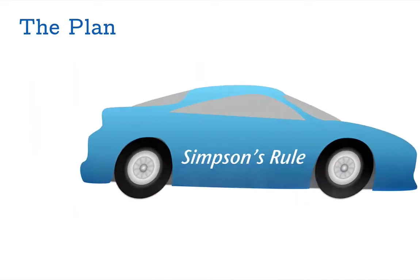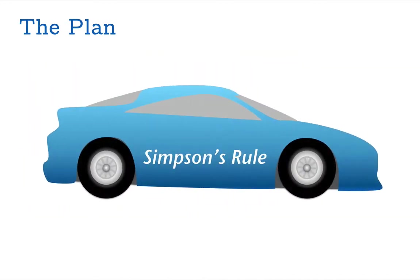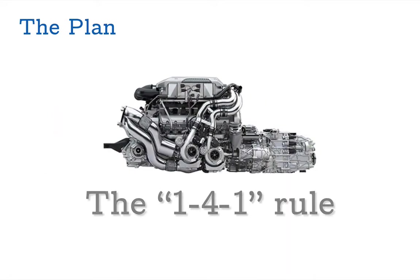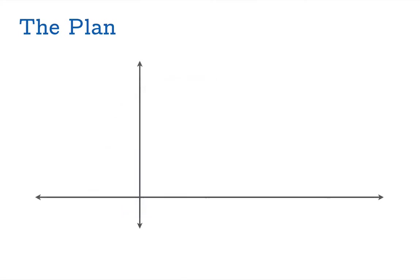Now if you're familiar with this method called Simpson's rule for approximating signed area, the 1-4-1 rule is really just the motor that's under the hood — it's what makes Simpson's rule work — and so that's why it's worth studying it in detail.